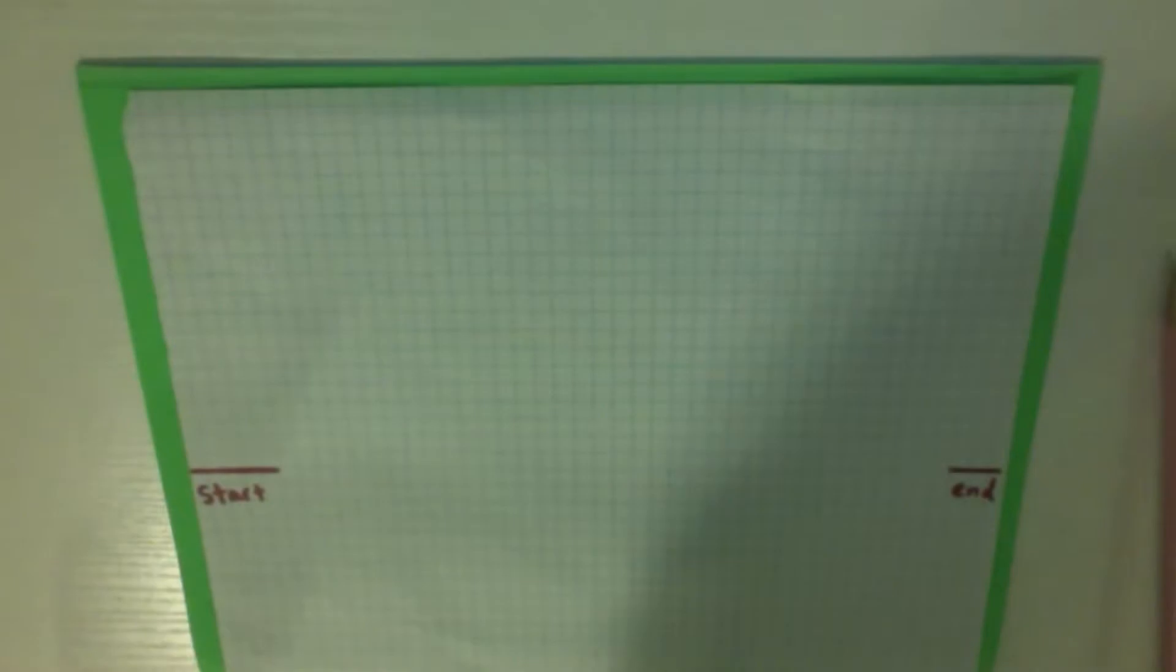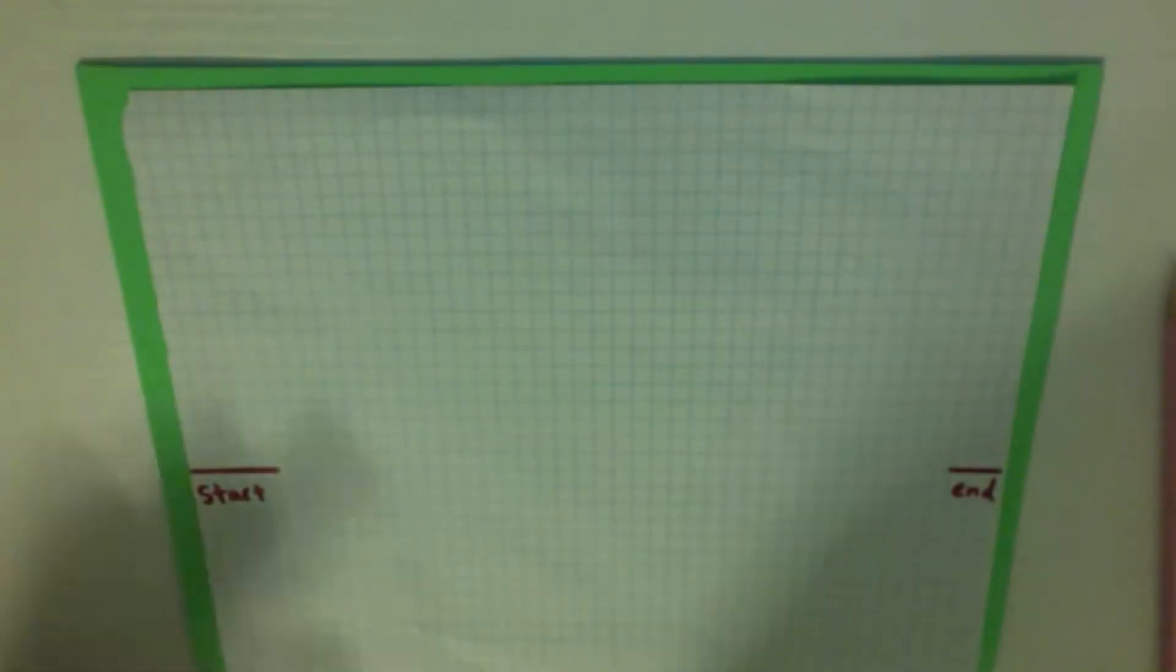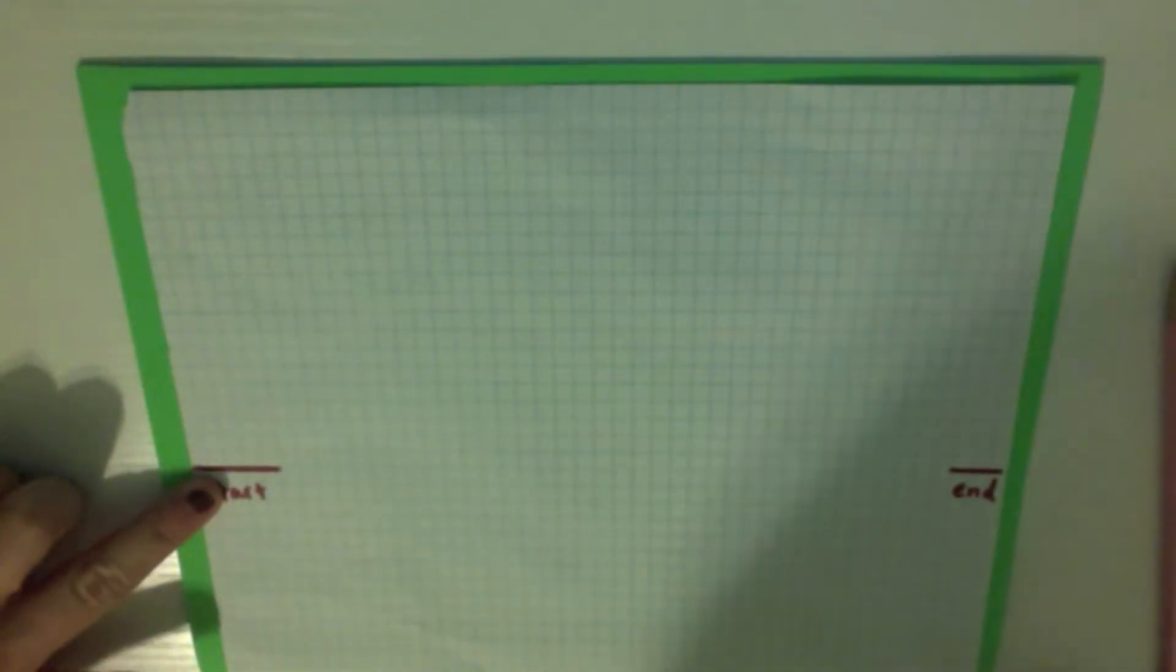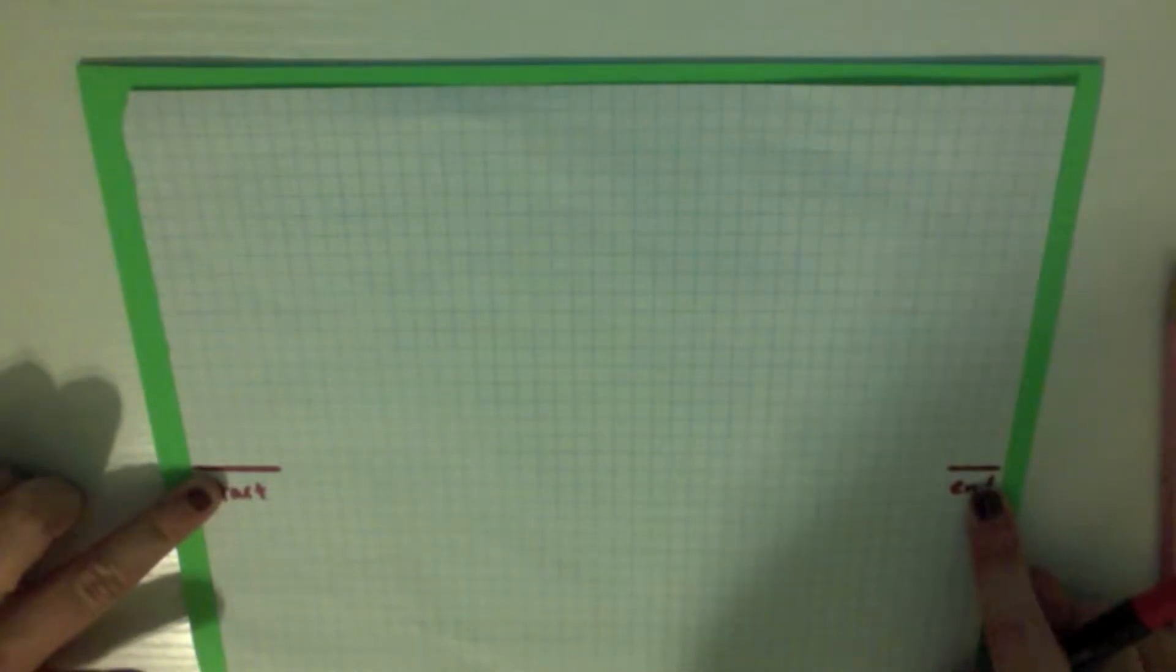I'm going to be using marker so that you can see my lines better. The line for your city needs to start on the left side of your paper and end on the right side of your paper.